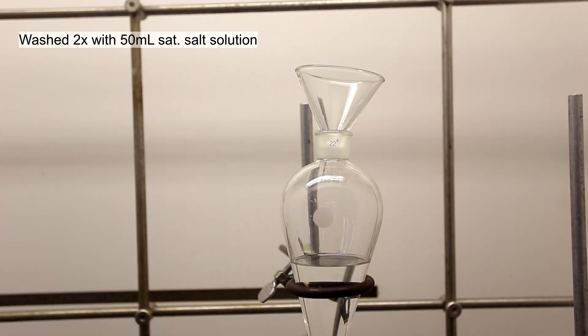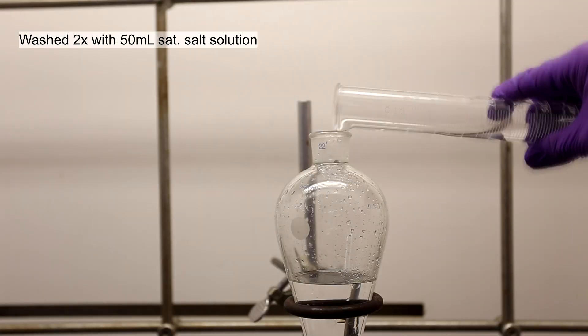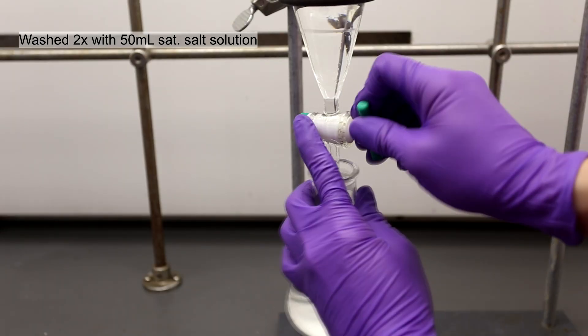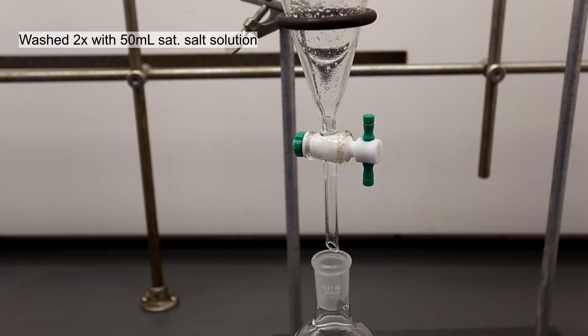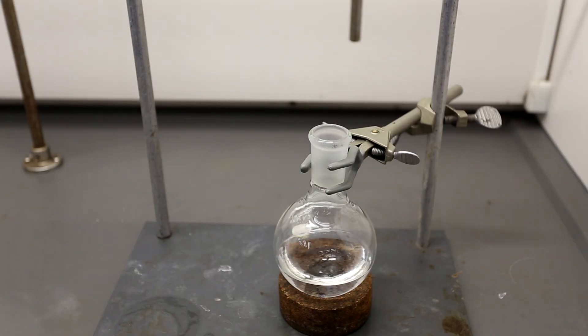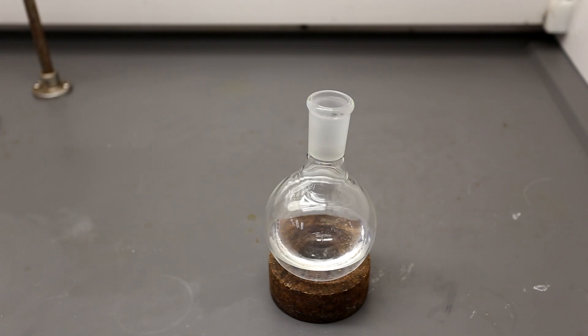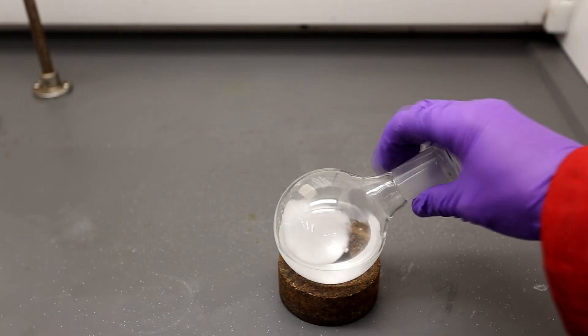The combined ether layers were then washed twice with 50 milliliters of saturated salt solution to dry it. The ether washings were then drained into a round bottom flask and dried using sodium sulfate.